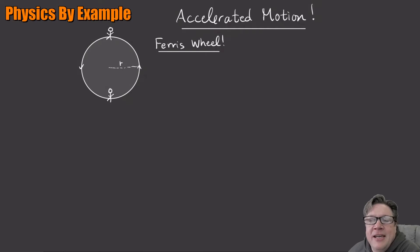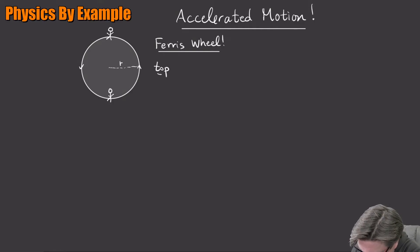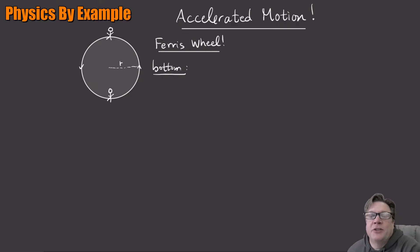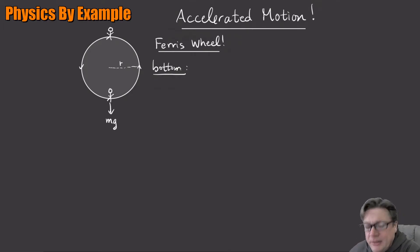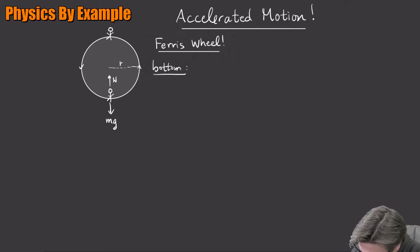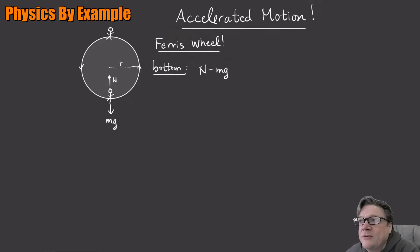Let's set this up. We'll start with the bottom of the ride. At the bottom, what forces do we have? It's only in the vertical — nothing's going on horizontally. We have normal force going up, as usual, because you're sitting on something, and gravity acting down. So we have N going up and mg going down — that's it as far as forces go.